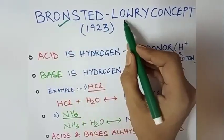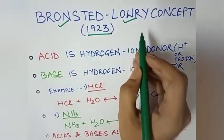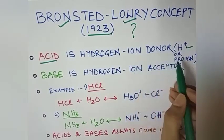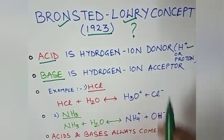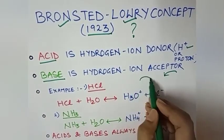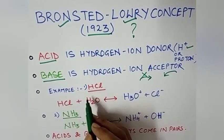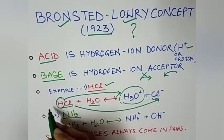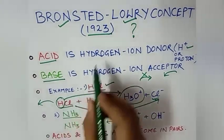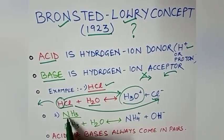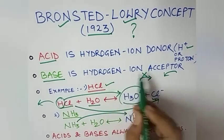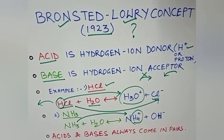Next comes the Bronsted-Lowry concept which was developed in 1923. According to Bronsted-Lowry, HCl donates one H+ ion forming Cl-. Similarly for ammonia NH3, when it reacts with water one H+ ion is added, that is it accepts one hydrogen ion and forms NH4+. That is, hydrogen acceptor is base according to Bronsted-Lowry concept.